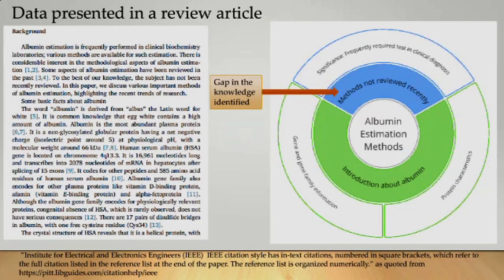This slide gives the mind map of the introduction part, split as per the subtopics or sub-areas. In this case, the introduction is split into two main subtopics. First is the introduction to albumin — its protein characteristics, its gene and gene family information. The other part talks about methods which have not been recently reviewed but are useful in estimation of albumin. So this definitely is a gap in the knowledge because several methods have not been reviewed. Further, the significance of these methods, which are frequently required and particularly important in clinical diagnosis, means the methods have to be very specific, and a large variety of methods are already available.